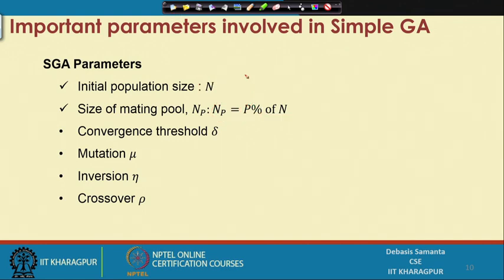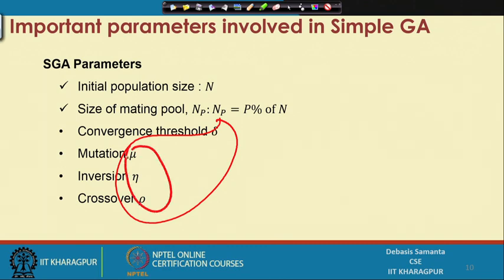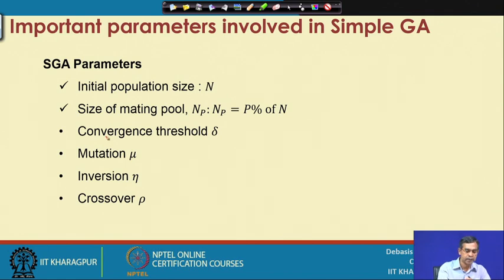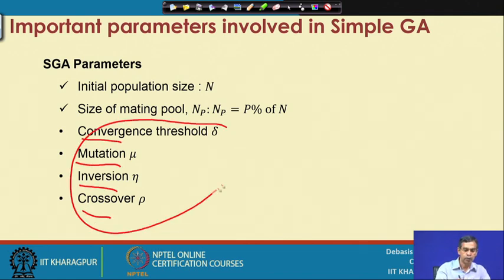Other parameters in simple GA include the convergence threshold — the range by which the result is considered near-optimal or near-minimum/maximum — as well as mutation parameters, inversion parameters, and crossover parameters. We will discuss all these parameters when we discuss each operation in detail.